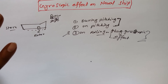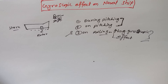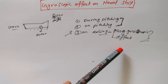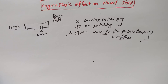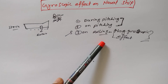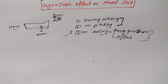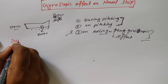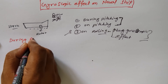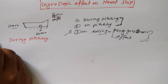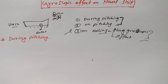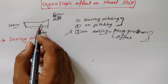If we are considering a naval ship, there is no gyroscopic effect in the case of rolling. So what we have to study is only two cases: during pitching and on pitching. For the rolling case, just remember that there is no gyroscopic effect. So let's consider the case during pitching.